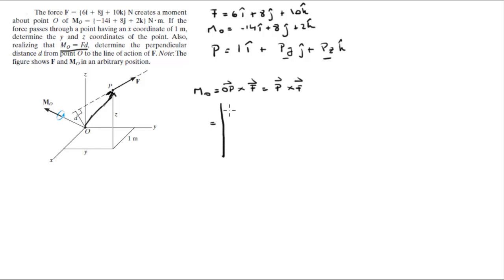So to calculate this, you draw your matrix, i, j, and k. You know that P is equal to 1, py, and pz, the values we're trying to find, and the force is 6, 8, and 10. So you redraw your first and second column, 1, py, 6, and 8.